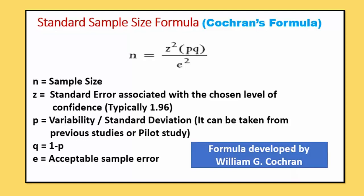Now we will discuss this formula in detail. Here in this formula: N is equal to sample size; Z is equal to Z-table value; P is equal to variability; Q is equal to 1 minus P; and E is equal to sample error, or in many books we call it margin of error.